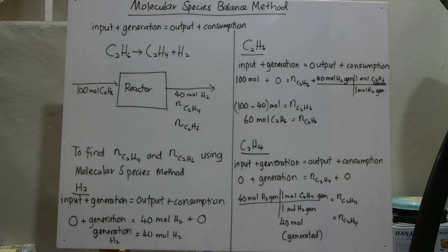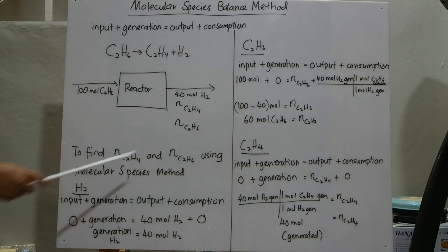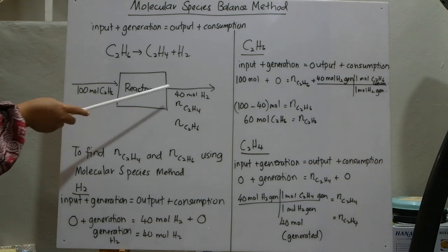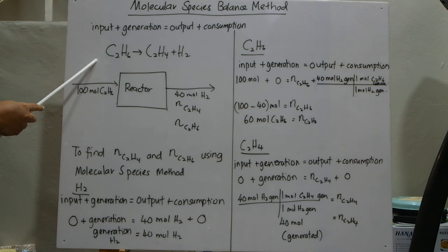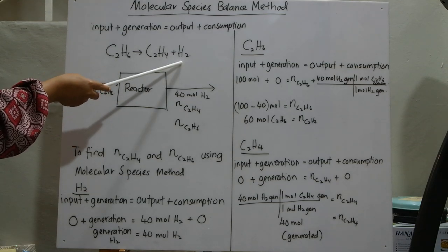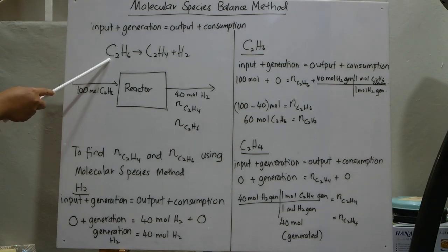The question wants us to find the unknown amount of ethylene produced and the amount of unreacted ethane using the molecular species method. We have 100 moles of C2H6 input and produce only 40 moles of H2. If the process reacted completely, 100 moles of C2H6 would produce 100 moles of C2H4 and 100 moles of H2 based on stoichiometry. Since this process has only one reactant, C2H6 is the limiting reactant.